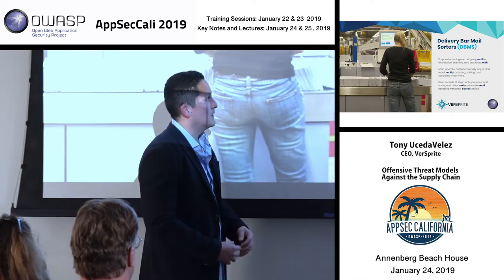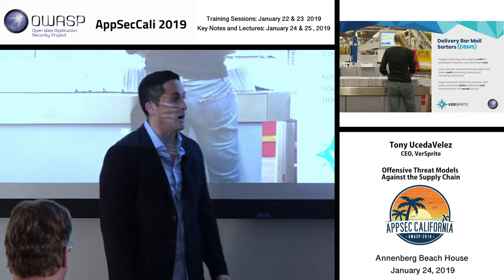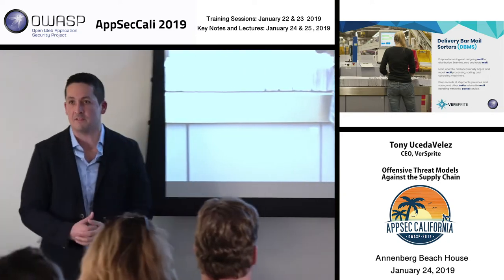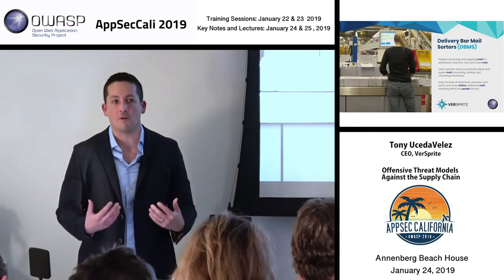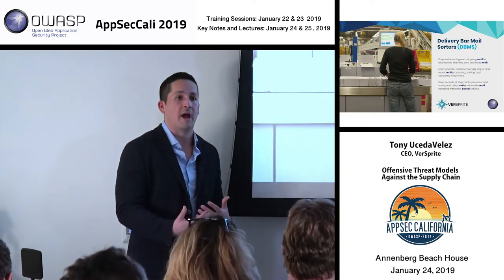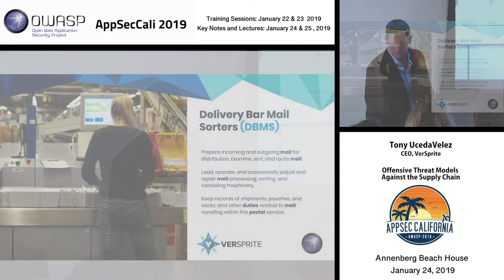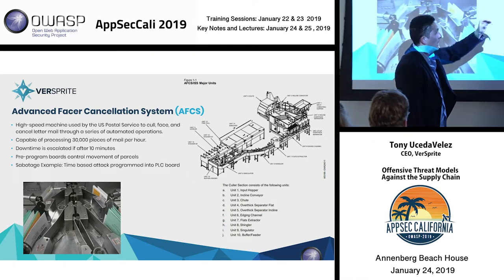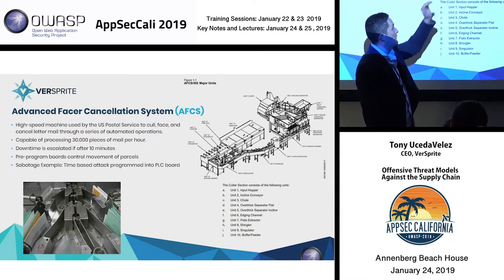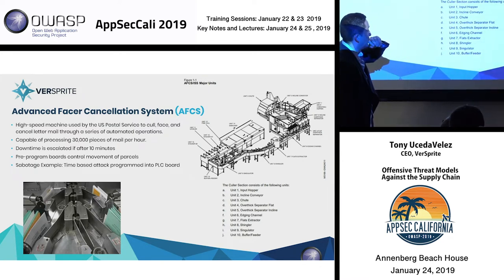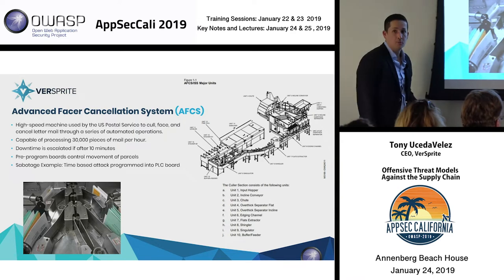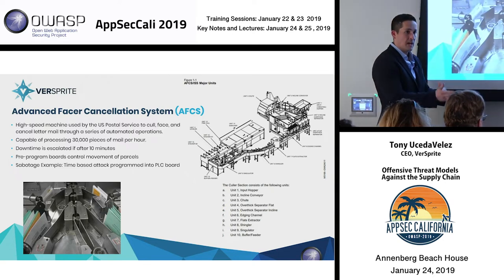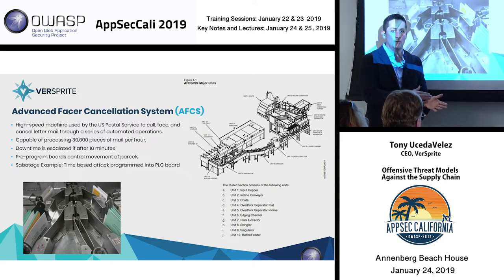From an impact standpoint, this is a very important piece of machinery that was recently updated nationwide a couple years ago. It's important when we do threat modeling that you understand the context of impact if something were to have downtime. Another key one is the Advanced Facer Cancellation System — basically half the length of a football field. It has multiple different PLC boards that rely on software and firmware to control things like lifting levers. If any one of those things goes wrong, there's downtime.